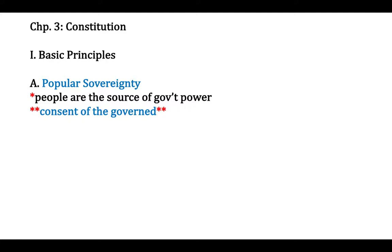The Constitution, as you guys have found out, includes much more than just the 27 amendments. We also have our seven articles that discuss the structure and inner workings of our U.S. government. Before we talk about structure or get into any of that, I just want you to have an understanding of the basic themes or principles of the Constitution and how our government is structured to reflect these principles.